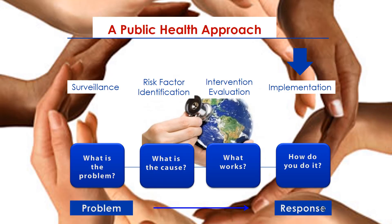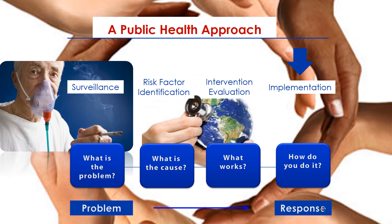In summary, public health has a specific approach that is systematic and methodical — from identifying the problem, to finding its cause, to seeing what works, to seeing how to implement it, and how to move from a problem to a response. Public health follows a systematic pattern that is similar to the nursing process.